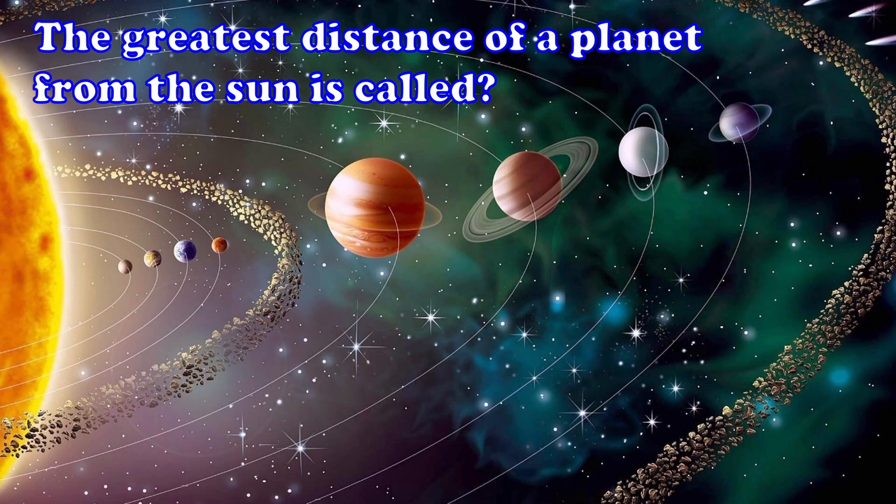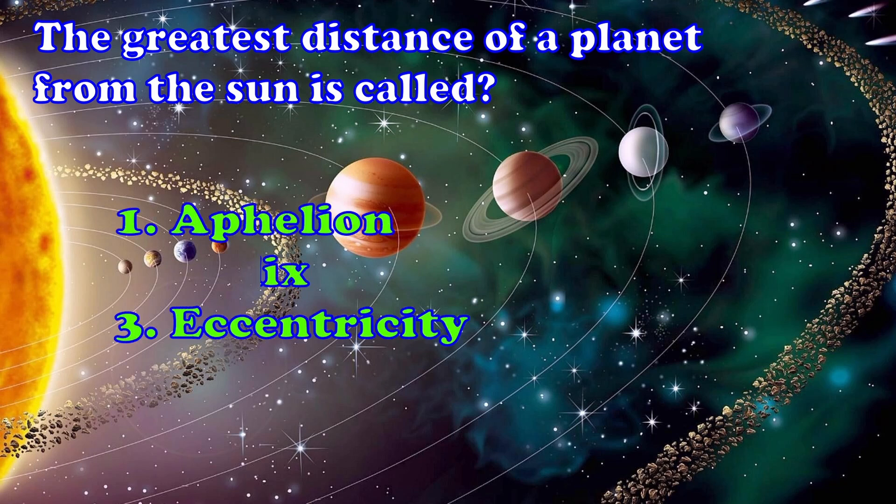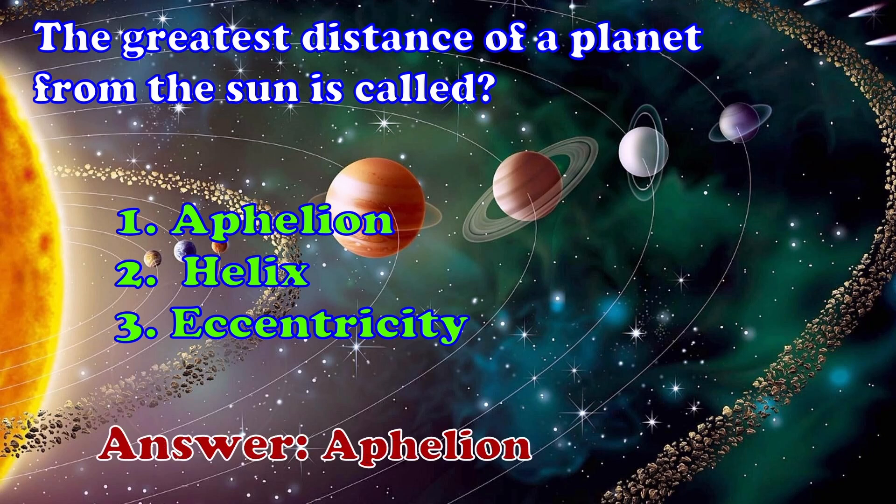The greatest distance of a planet from the Sun is called? 1. Aphelion 2. Helix 3. Eccentricity. Answer, Aphelion.